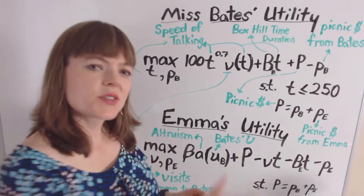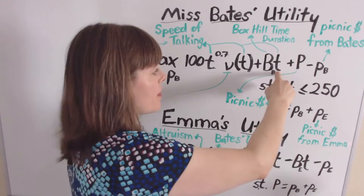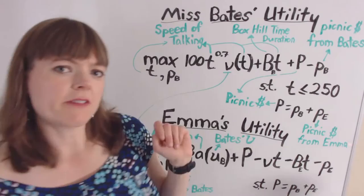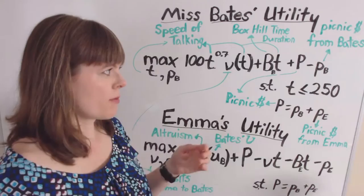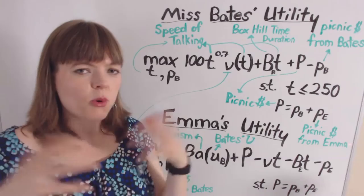The second piece of Miss Bates' utility function is the time duration of the picnic at Box Hill times the amount of talking Miss Bates does per minute at Box Hill. Since Miss Bates likes talking, the longer the picnic, the more she gets to enjoy herself. These decisions are always looking forward — deciding how much to contribute and how fast to talk both happen before the picnic, and the objective function is always with respect to the point in time when the person actually makes the decision.